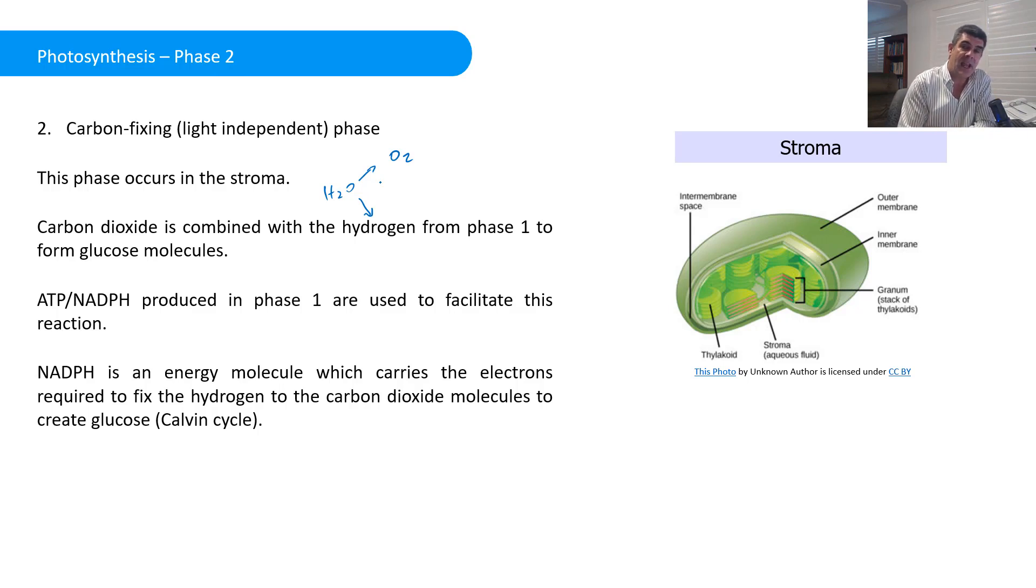It's being carried there along with electrons and lots of energy, and that allows for the transfer of, or the fixing, if you prefer, of the hydrogen to the carbon dioxide. That process of linking hydrogen and carbon dioxide is what leads us to the formation of the carbohydrate glucose, C6H12O6.